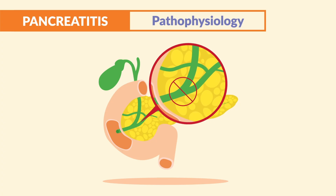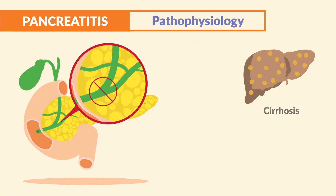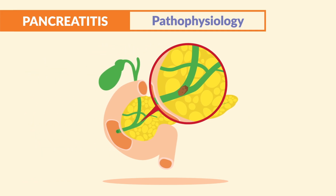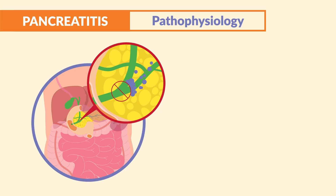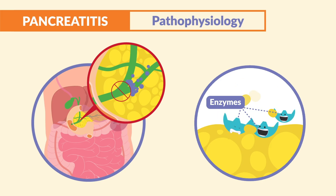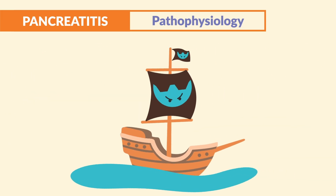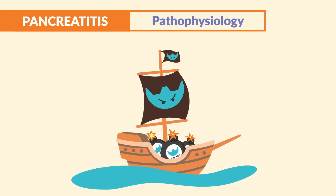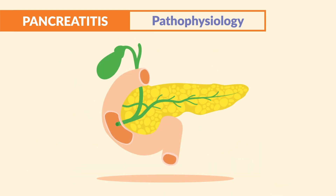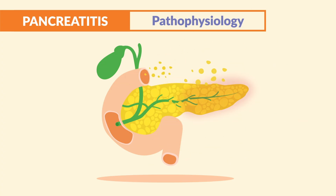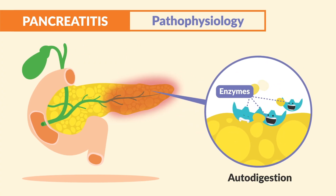If the pancreatic duct is blocked — say from inflammation in liver cirrhosis or hepatitis, or a gallstone that got stuck — the enzymes can't get out of the pancreas and into the intestine, so they accidentally activate prematurely within the pancreas. It's like a pirate ship where the cannonballs explode inside the ship and sink it — these enzyme bombs explode inside the pancreas, causing supersized inflammation as the pancreas digests itself. This is what is meant by autodigestion.